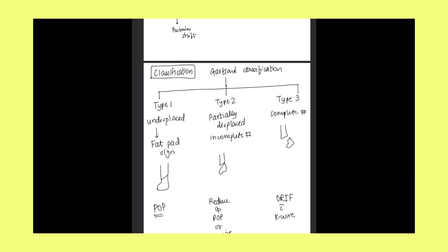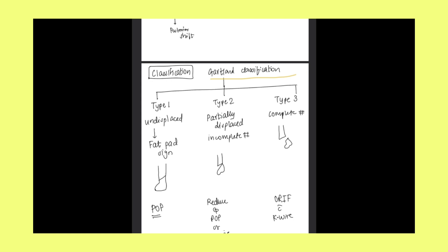Coming to the classification. For supracondylar fracture of humerus, there is a Gartland classification. This Gartland classification says that supracondylar fracture of the humerus could be divided into three types: Type 1, type 2, type 3. Type 1 is basically undisplaced. Type 2 is partially displaced and incomplete fracture. Type 3 is complete fracture.